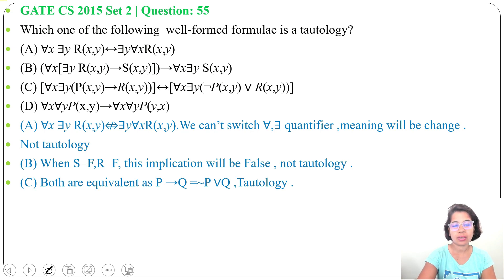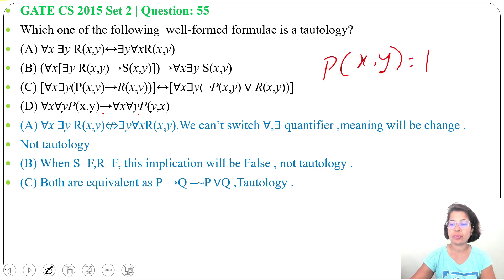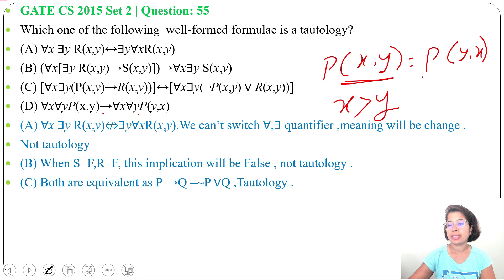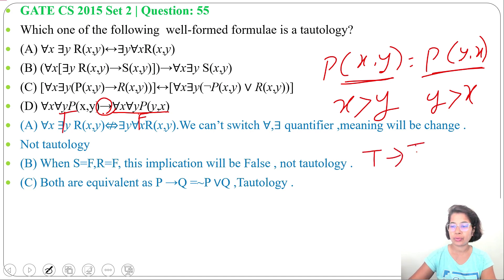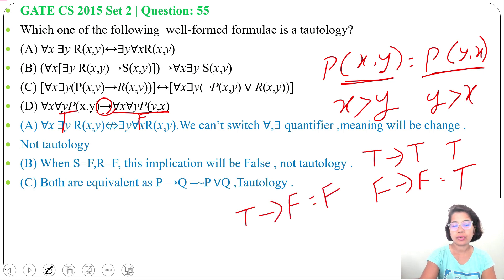Option D: 'for all x, for all y, p(x,y)' implies 'for all x, for all y, p(y,x)'. p(x,y) is not equal to p(y,x). Suppose p(x,y) is 'x > y', then p(y,x) would be 'y > x', so it's not a tautology. In case of implication, true implies false is false — rest are true. As both sides are not equal, their implication is not a tautology.